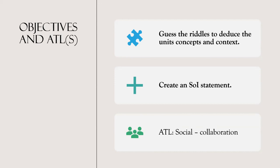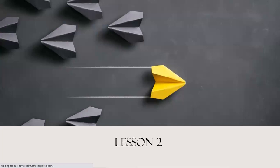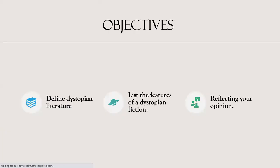You'll have to deduce what is the concept and what is the context. Afterwards, we are going to generate an SOI statement that is reflective to the context and the concepts. The second lesson will highlight the following objectives: we are going to define what dystopian literature is, indicate its features so you can identify the novel we'll be reading, and then reflect your opinion on what you think a dystopian novel is.